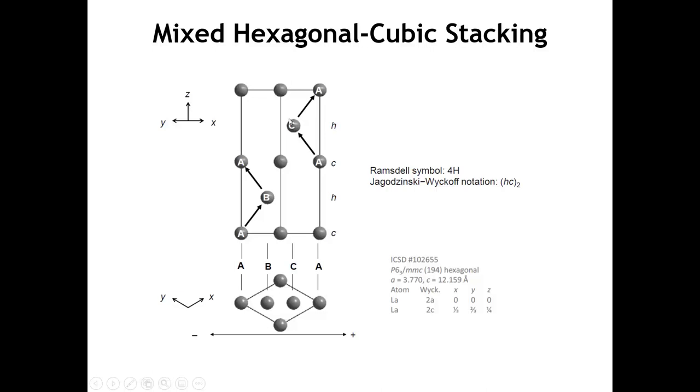And then we come back to the third layer here, which is a C layer. But above and below that, we have A and A. So because the sandwich has the same kind of layer on either side, we call that a hexagonal layer. So that's where we get this Jagodzinsky-Wyckoff notation.